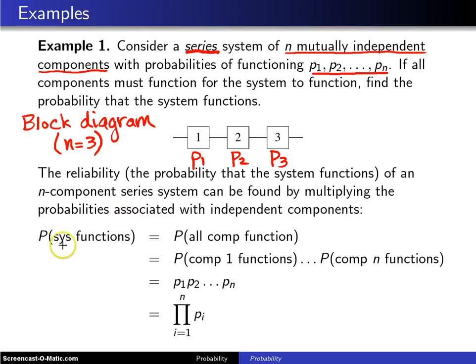The probability that the system functions is the probability that all components function. And that is true because of the design of the system. When they are placed in series in this fashion, if one component goes out, then the system goes out.